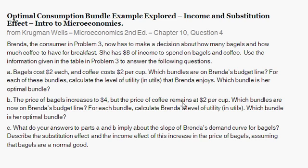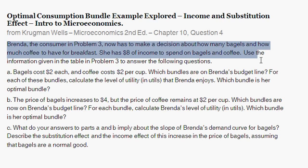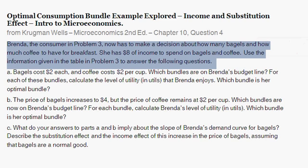This is actually building on the previous problem, and I'll link to that previous problem in this video so that you can see it if you haven't seen that already. So Brenda, the consumer in Problem 3, which I'll link to, now has to make a decision about how many bagels and how much coffee to have for breakfast. She has $8 of income to spend on bagels and coffee, and then use the information given in Table 3 to answer the following questions.